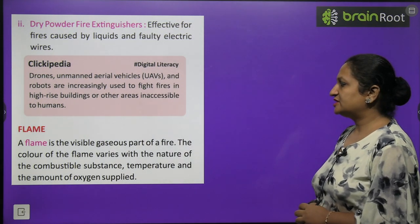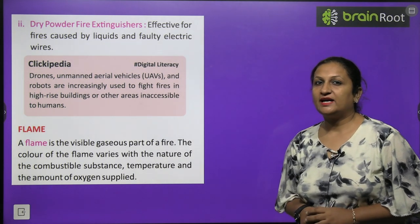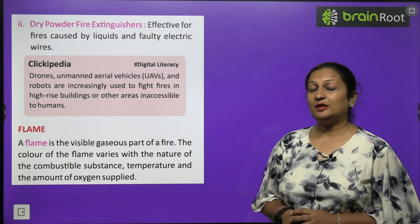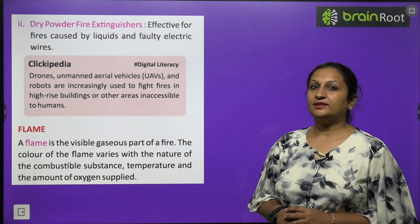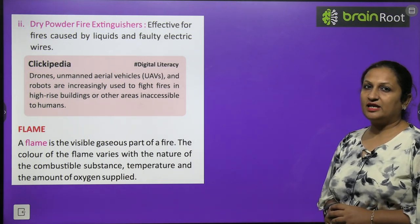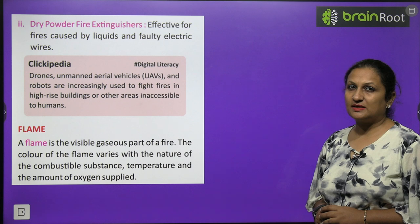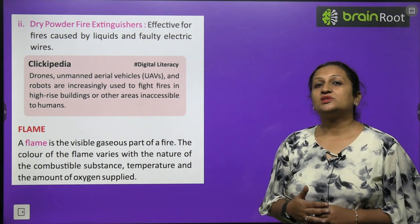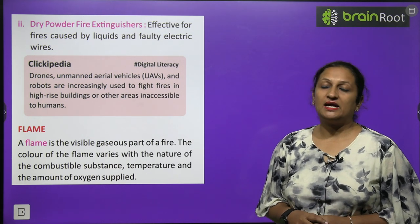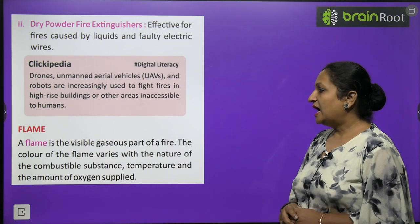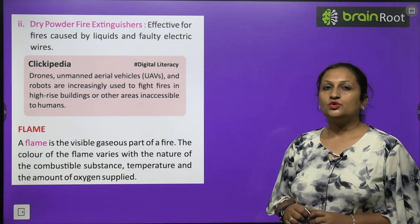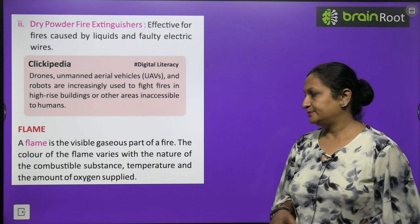A flame is the visible gaseous part of the fire. When you burn a candle or LPG, you see a flame. The color of the flame varies with the nature of the combustible substance, the temperature supplied, and the amount of oxygen it receives.